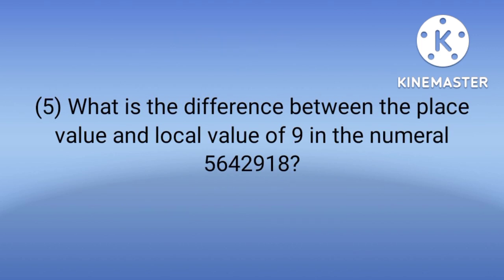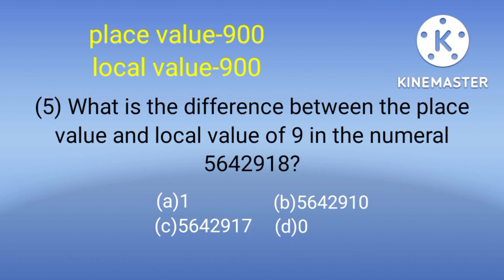The next question is 5. This is the same type. What is the difference between the place value and local value of 9 in the numeral 5642918? These are the options. We already know what place value is, now we know what local value is. The meaning of place value and local value is the same. The position of 9 is 900, so its place value is 900 and local value is also 900. So the difference is 900 minus 900. The answer is D, 0.